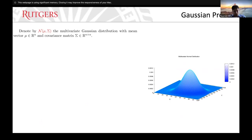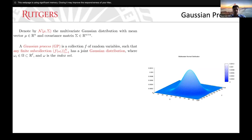Let me denote X_n as the multivariate Gaussian distribution with mean mu and covariance matrix sigma. A Gaussian process is a collection of random variables where any finite sub-collection has a Gaussian distribution. So we have these random variables where any finite sub-collection yields a Gaussian distribution.